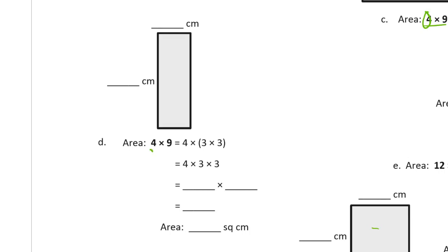For D, the area is 4 times 9. If we take this 9 and call it (3 times 3) in parentheses, then we move the parentheses: instead of 4 times (3 times 3), we call it (4 times 3) times 3. So 4 times 3 goes here — 4 times 3 is 12 — times 3. 12 times 3 is 36 square centimeters.